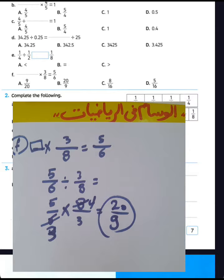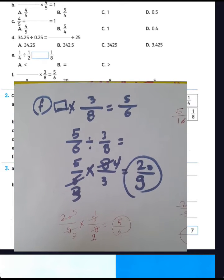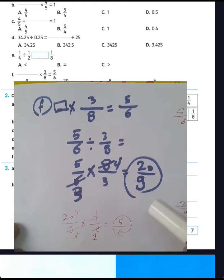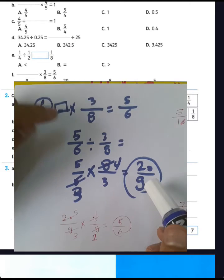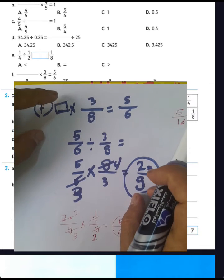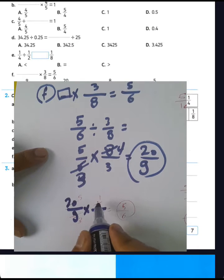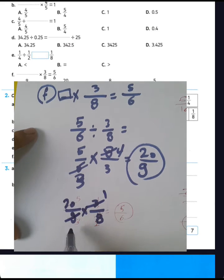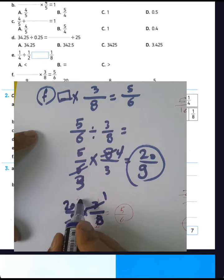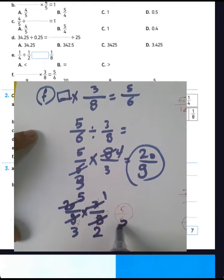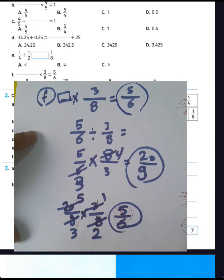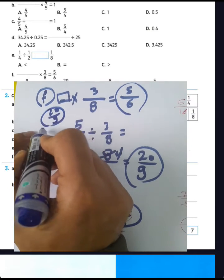The result is 20 over 9 for question letter F. To verify: put 20 over 9 in the space and multiply by 3 over 8. Simplify: 3 divided by 3 equals 1, 9 divided by 3 equals 3, 20 divided by 4 equals 5, 8 divided by 4 equals 2. Then 2 times 3 equals 6 and 1 times 5 equals 5, giving 5 over 6. Correct — so write 20 over 9 for question letter F.